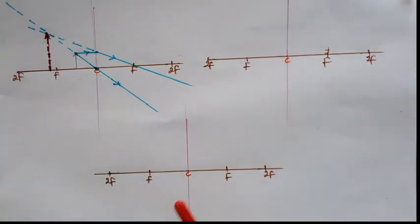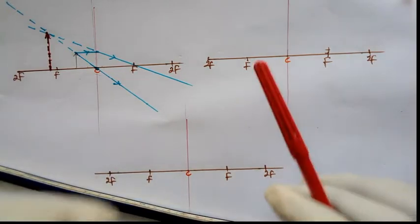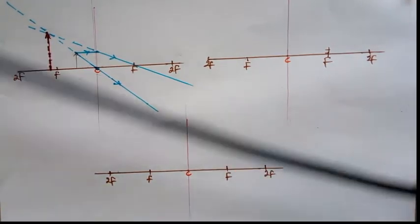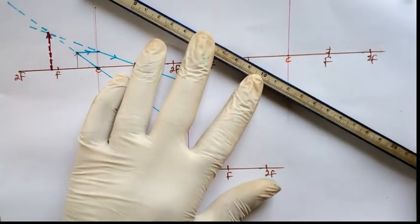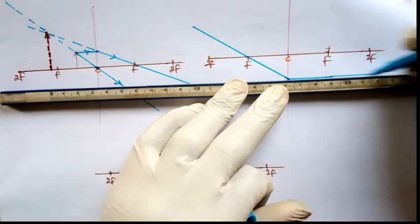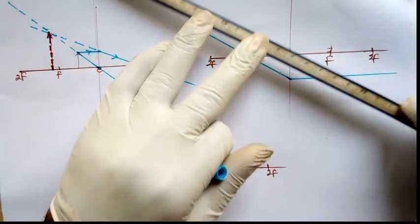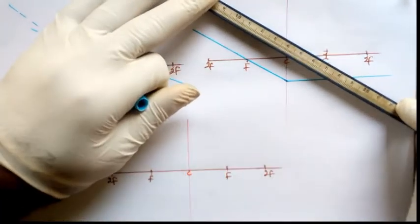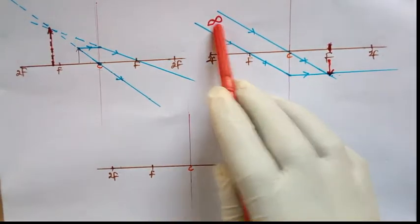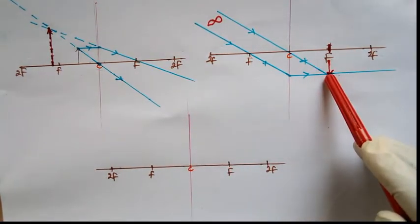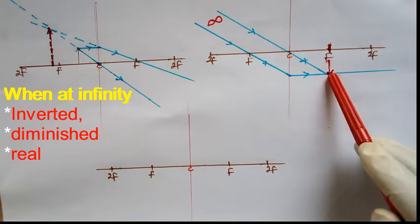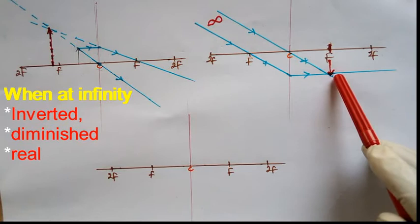What happens when the object is at infinity? This time around, we're going to reverse the case. The ray that passed through F will come parallel to the principal axis, and that which passes through C will pass through unrefracted. When the object is at infinity, the image would be at F, and the nature of the image would be: it's going to be inverted, it's going to be real, and it's going to be diminished.